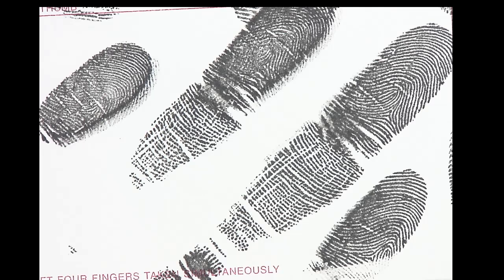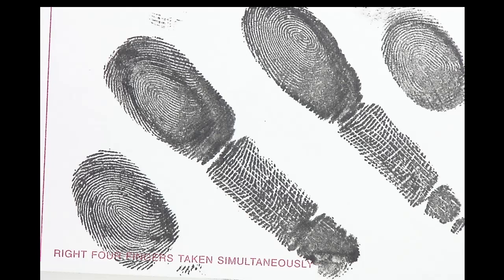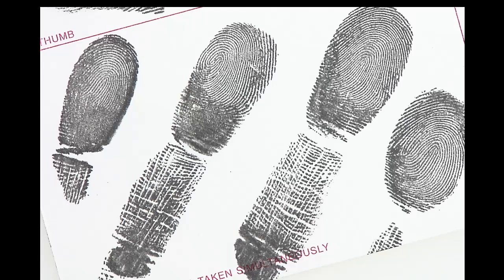This is a right hand. What are the two loops? This is an ulnar loop and this is also an ulnar loop — they slant towards the little finger. Are there any radial loops? We have a whorl, a loop, a whorl, and a loop. Both loops are slanting towards the little finger side, and the whorls also slant in that same direction.